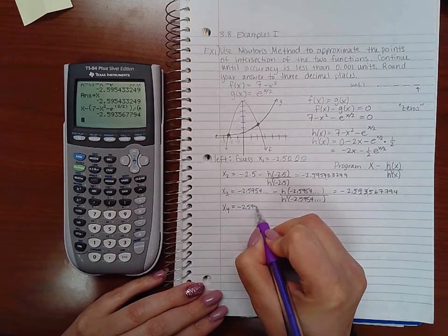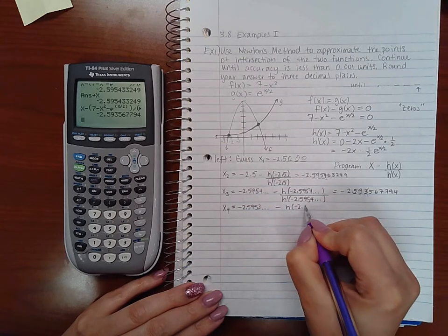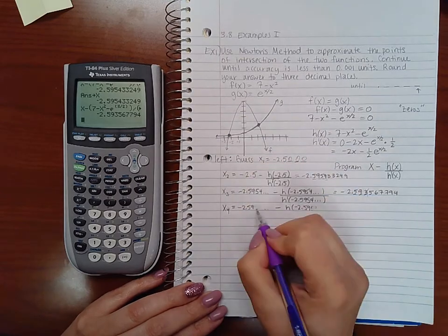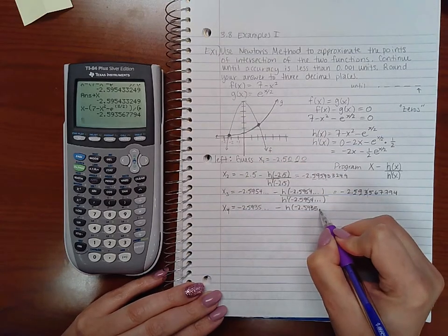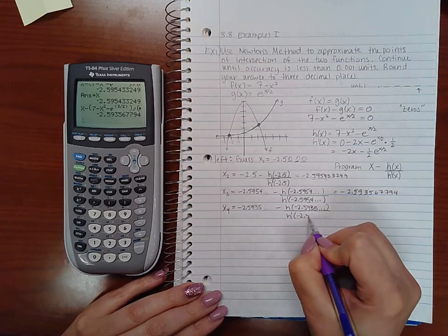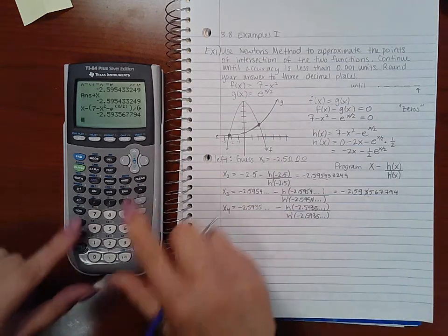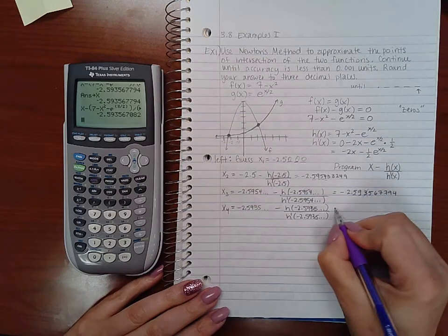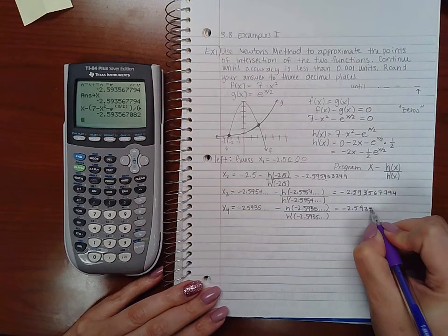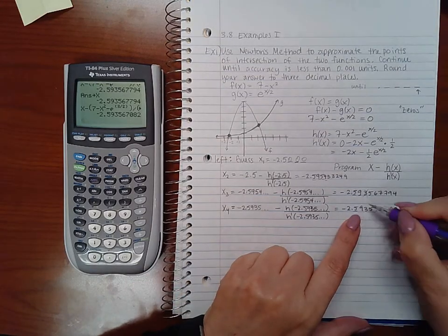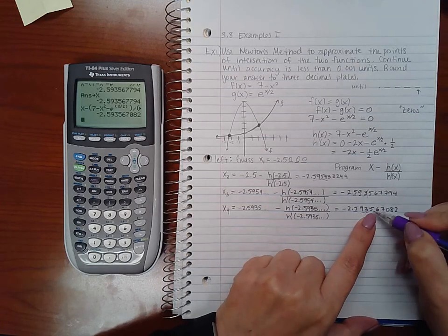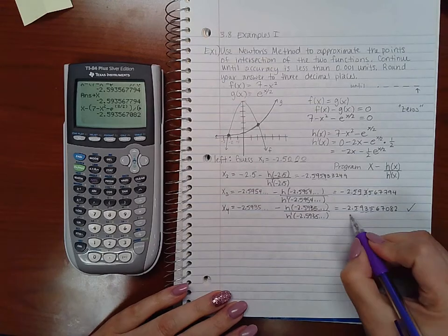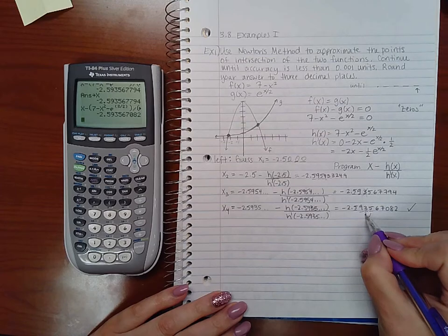So let's go ahead and find x4. That means I'm going to take this number and do h of that over h prime of that number. So again, I'm going to hit store as x, so it takes that whole number and stores it as x. Then I'm going to plug it into that programmed function, and I get negative 2.593567082. Well, notice now, the first digit is the same after the decimal, second digit is the same, third digit is the same, and the fourth digit is the same. So I can stop here. And if I round this to three decimal places, this five will cause this to go up.